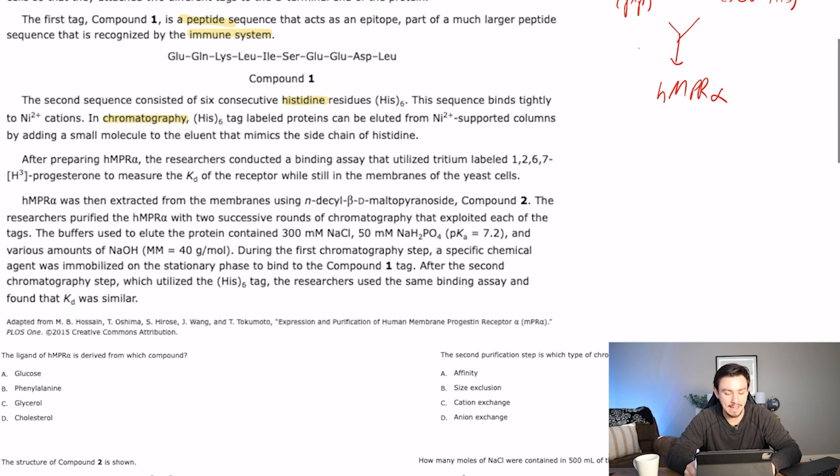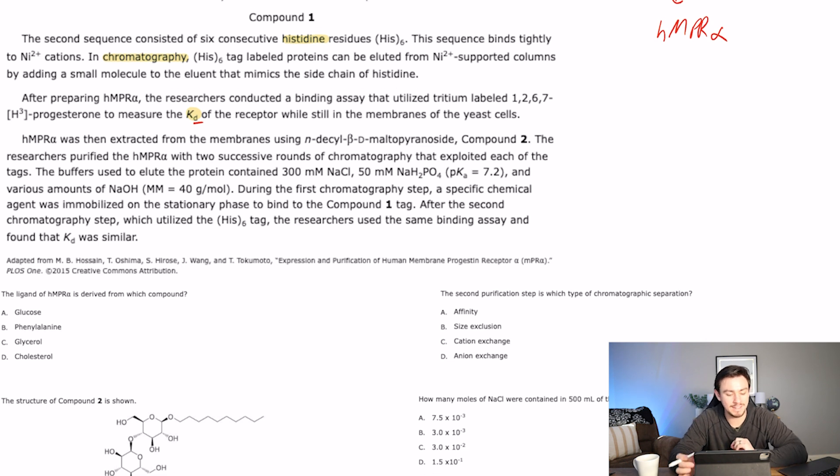The researchers conducted a binding assay that utilized tritium-labeled 1,2,6,7-H3 progesterone to measure the KD, which is a dissociation constant. Or maybe it's the association constant. I don't know. They're not very consistent about what that means on the MCAT. All you know is that whenever they have K-sub something, that we're talking about something to do with kinetics and law of mass action.